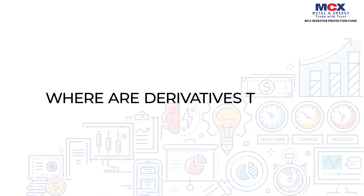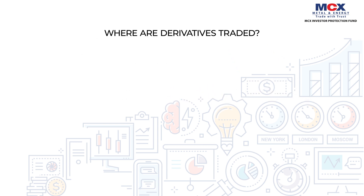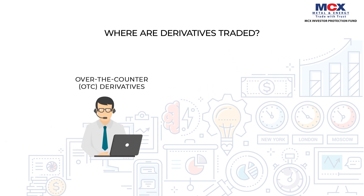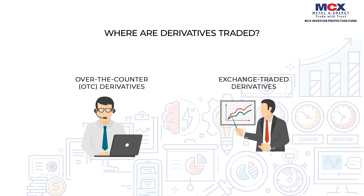Where are derivatives traded? Derivative contracts can be distinguished by the way they are traded. There are two major types of commodity derivatives based on their market mechanics: over-the-counter derivatives and exchange-traded derivatives.